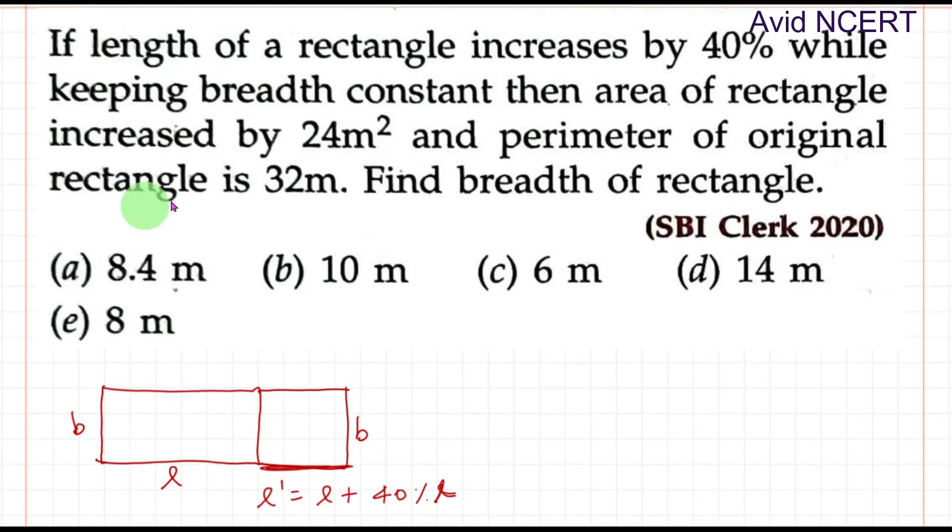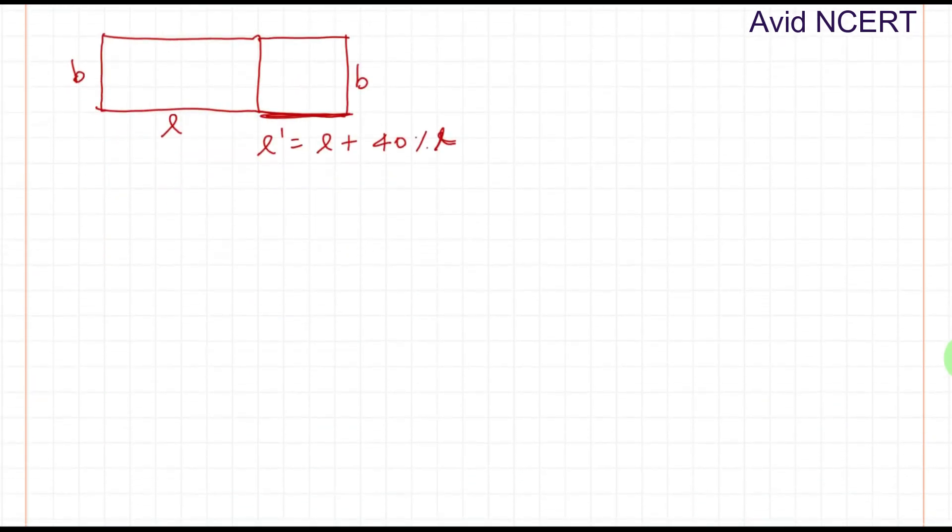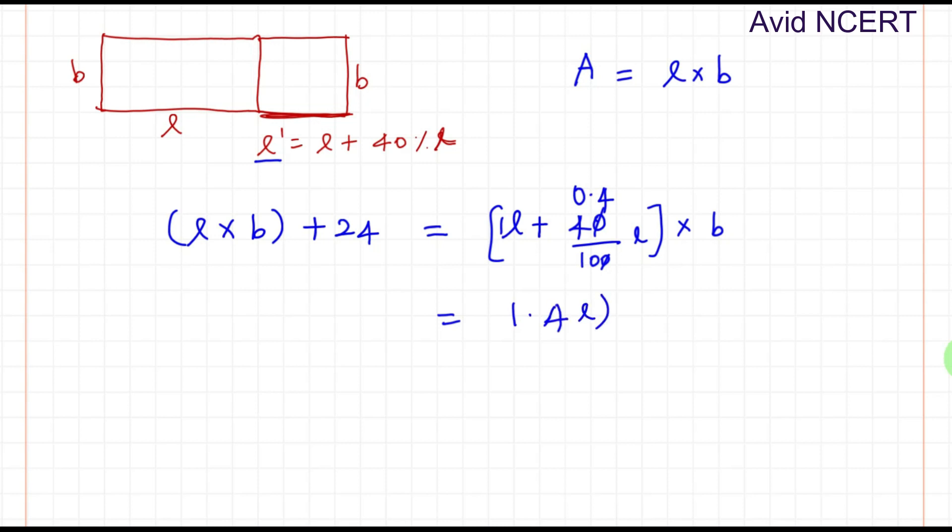When this is done, the area of the rectangle is increased by 24 square meters. The original area can be found by length times breadth. So the increased area is: L times B plus 24 equals the new area, which is L' times B, which is (L plus 40/100 times L) times B. 40/100 is 0.4, so 1L plus 0.4L equals 1.4L times B.